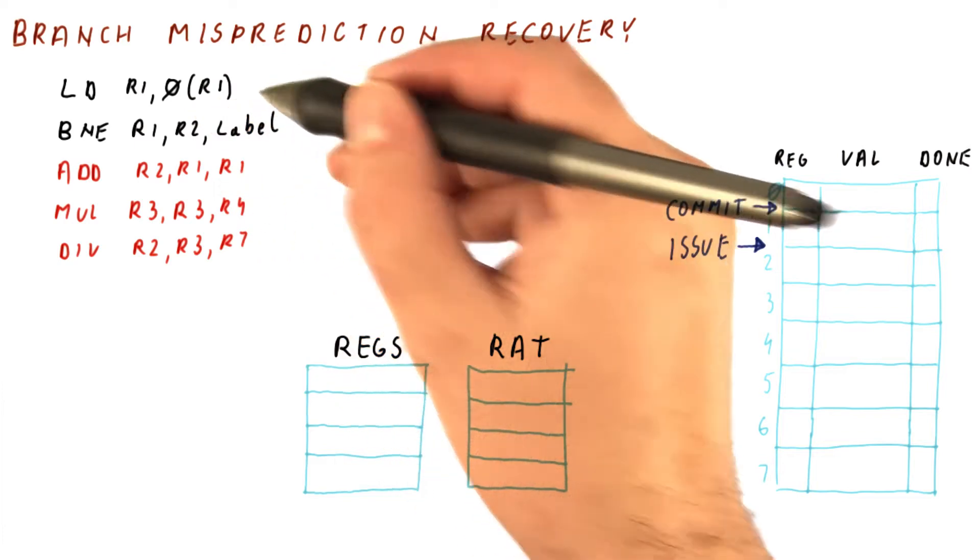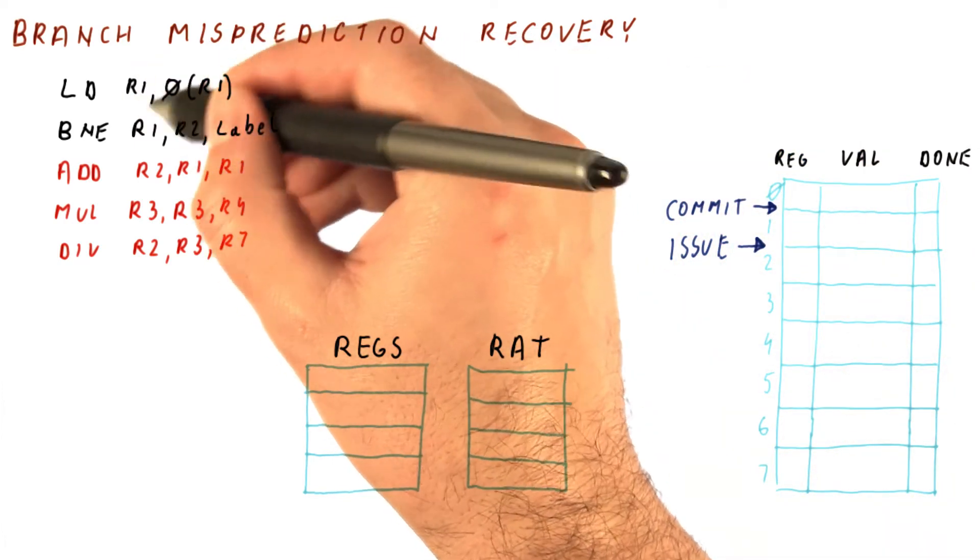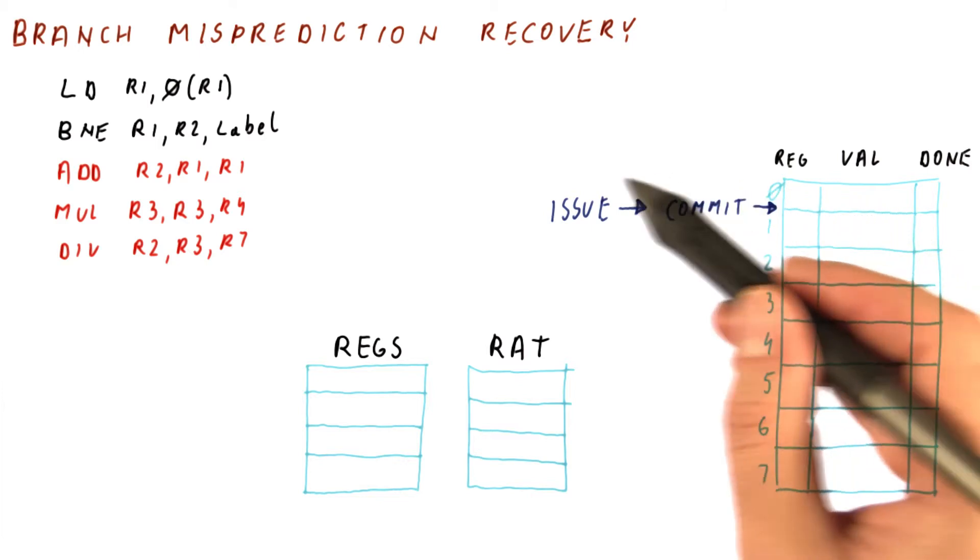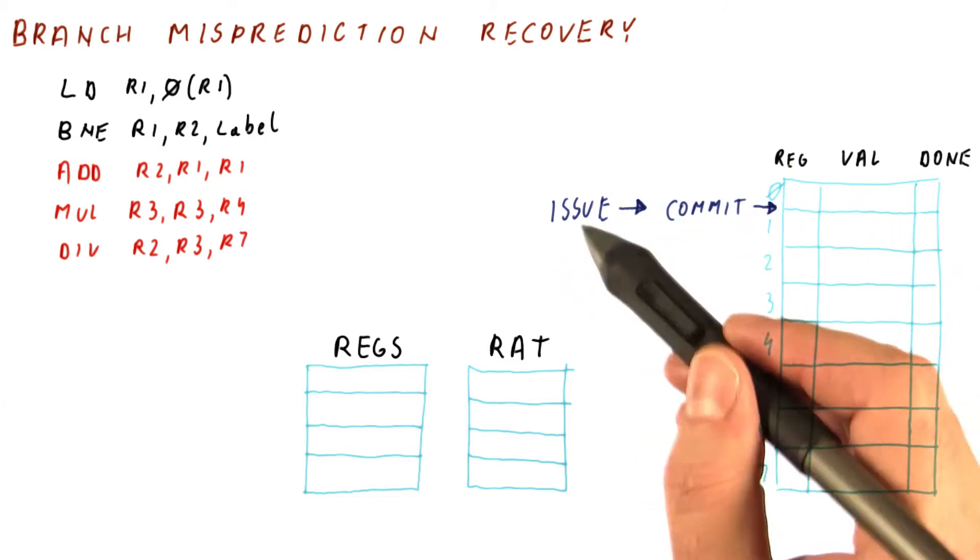First we will issue the load here, its output is R1. So at the beginning of all of this, the ROB is empty, the issue and commit pointers are the same, and there are no instructions.